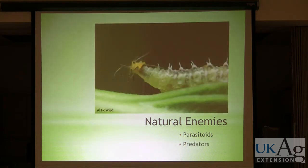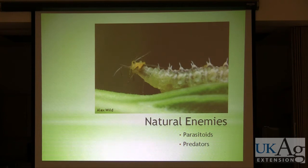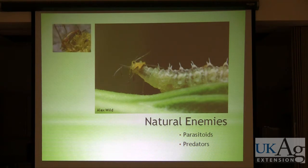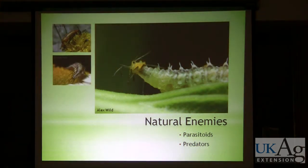The second category of natural enemies that attack insect pests are predators. This is a syrphid fly larva — basically a maggot that crawls around on the plant and devours aphids. It can also consume other types of pests as well. Some other examples of predators are soldier beetles and lacewing larvae. The adults of lacewings are not predators, but their larvae are very important predators.